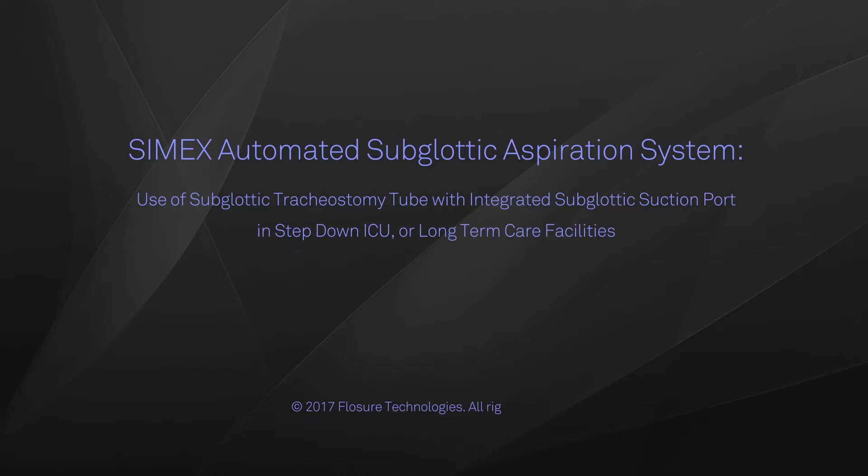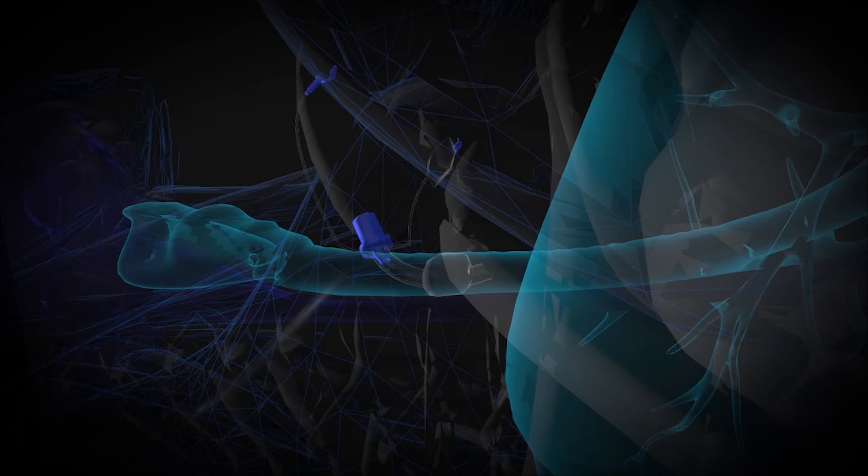Use of subglottic tracheostomy tube with integrated subglottic suction port in step-down ICU or long-term care facilities. Tracheostomy tubes are commonly used in step-down ICU, long-term care facilities, or nursing homes where patients are on mechanical ventilators.